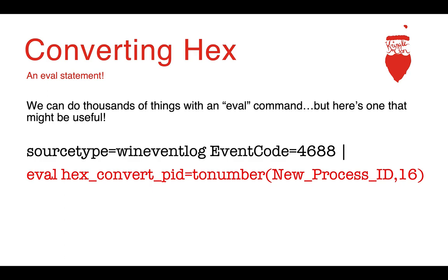What can we do about those hex values to make them regular integers to correlate them with other data sources? Well, it's the holidays, so let's get fancy. You can use an eval statement to add a new field in your results. That new field is going to contain the integer value corresponding to the hex field. The eval command takes whatever is in the New Process ID field, then runs the tonumber() function against it with an argument of 16, because we are telling the function to convert from base 16, which is also the same as hexadecimal. Then we take that result and make a new field in the data called hex_convert_pid with that value.